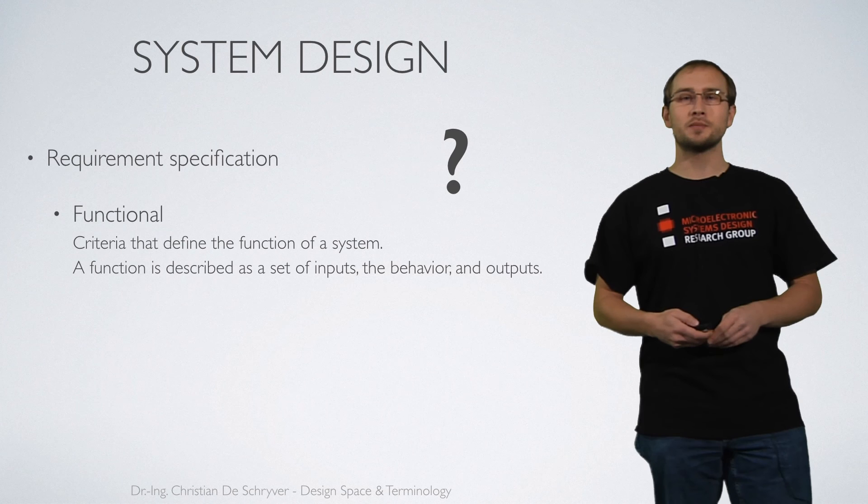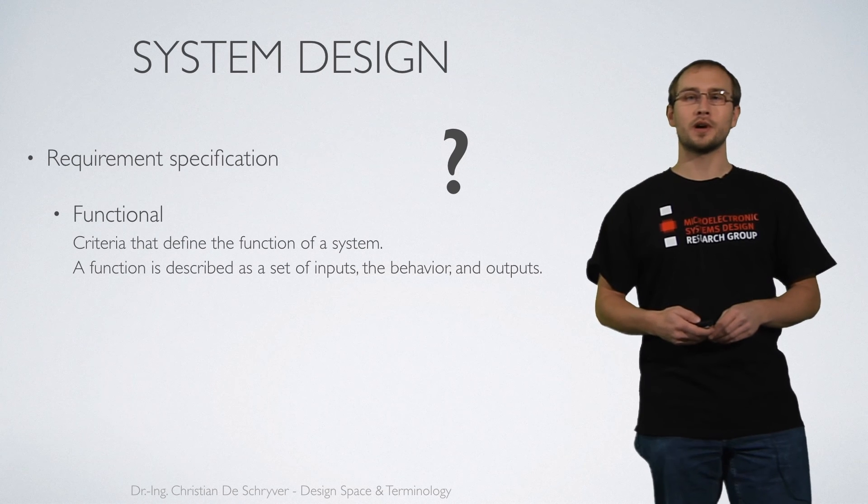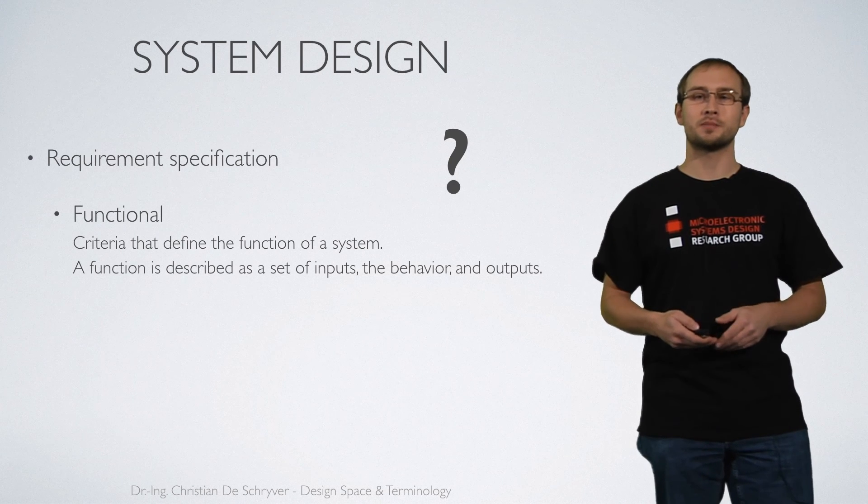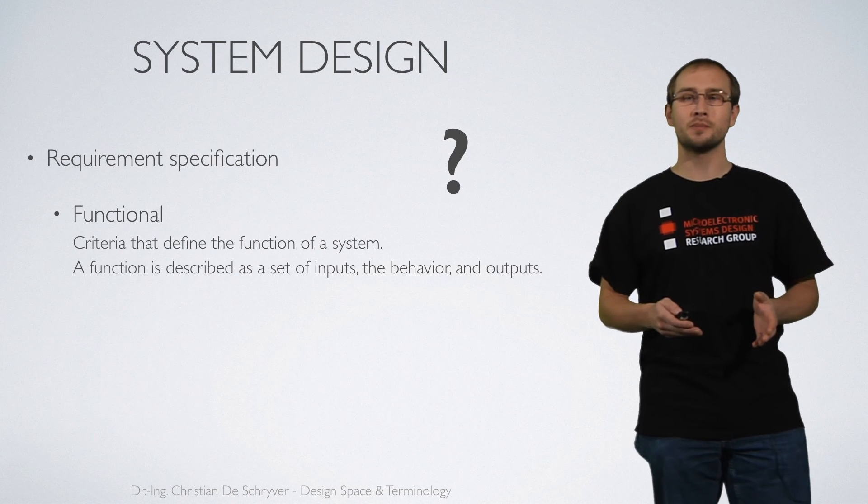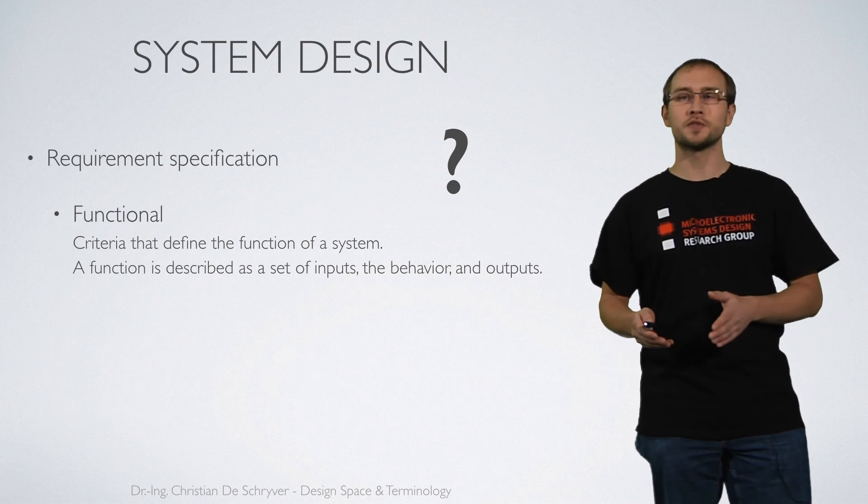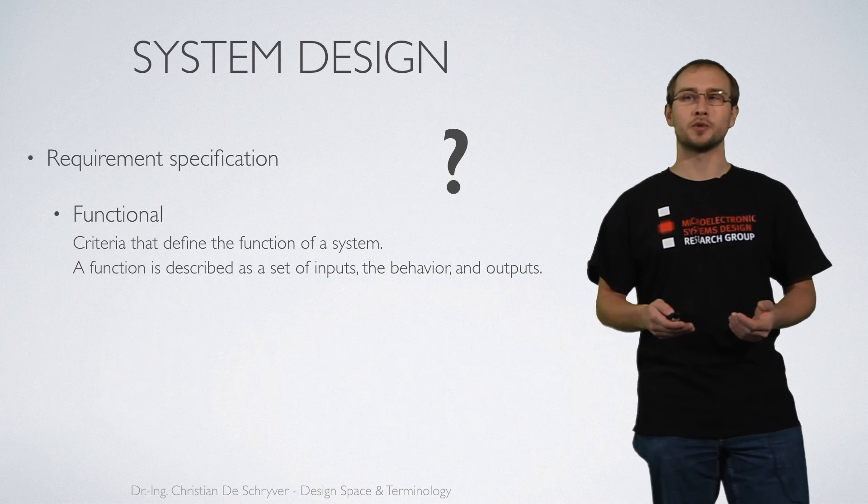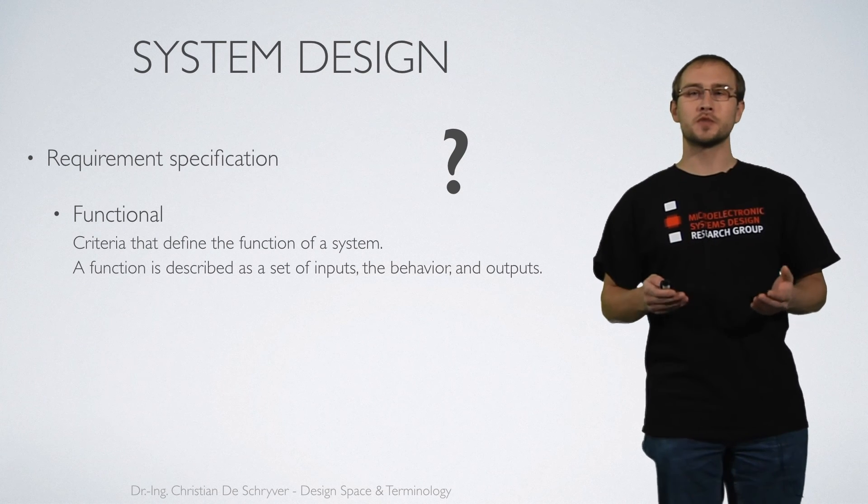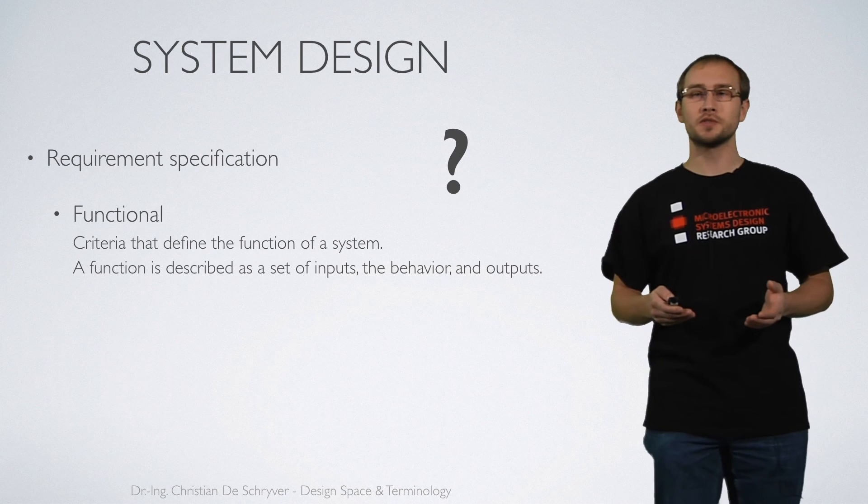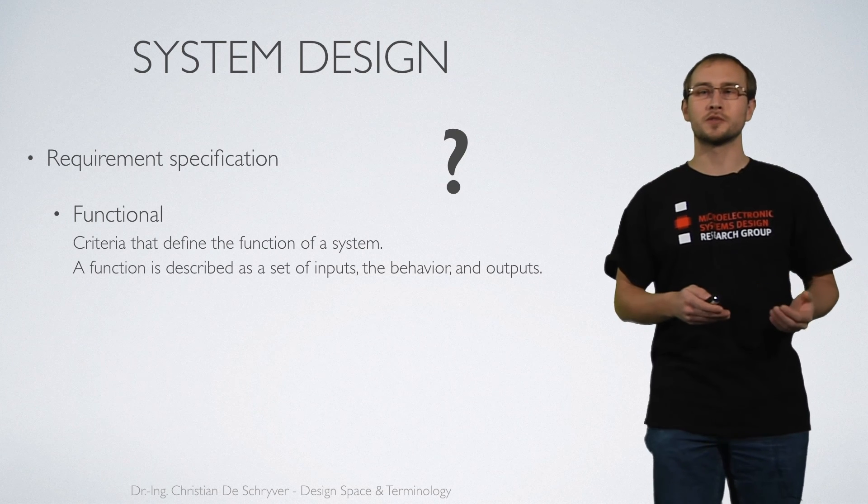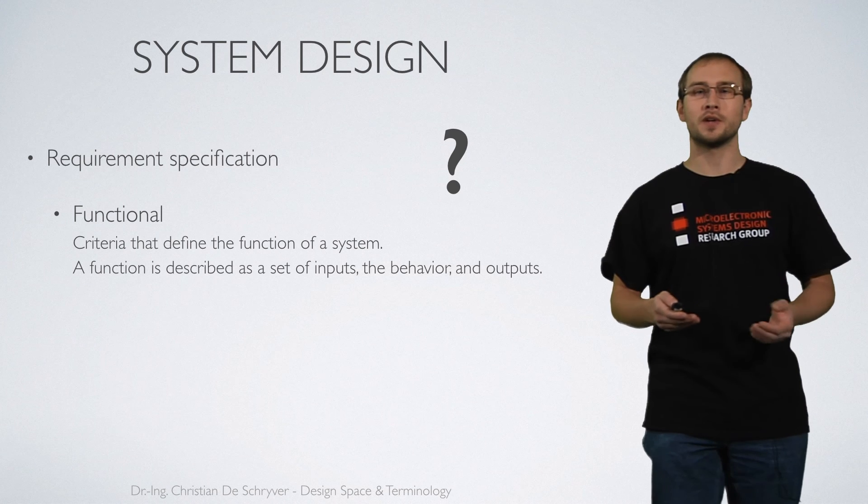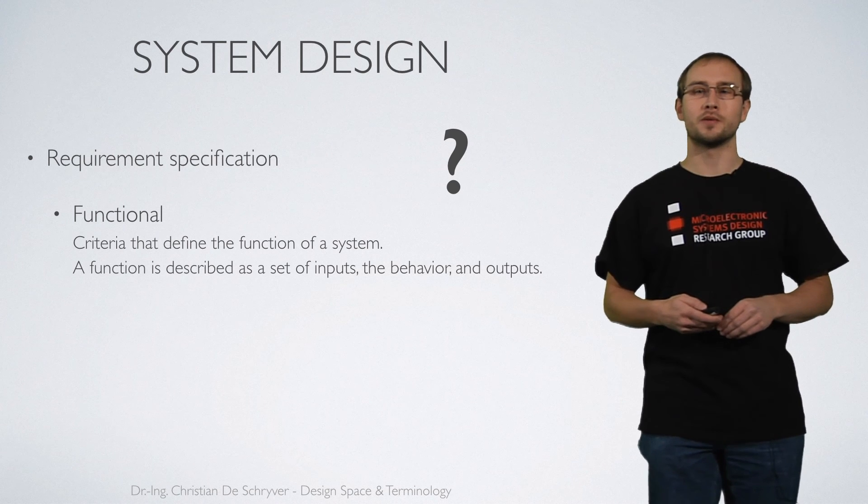There are two types of requirements. One are functional requirements that specify the behavior of the system. That means the inputs, the outputs and everything what is happening in between. Changing the behavior of the system would change the functional aspect of the system. Therefore those criteria are called functional criteria.